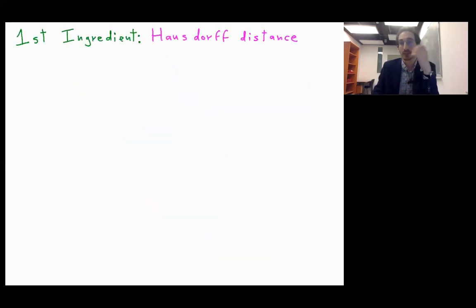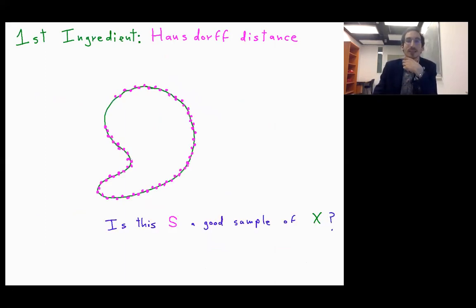The first ingredient, Hausdorff distance. So let's consider this sample of points of this set X. So we ask, is this S a good sample of X? Here the answer is no. Why?